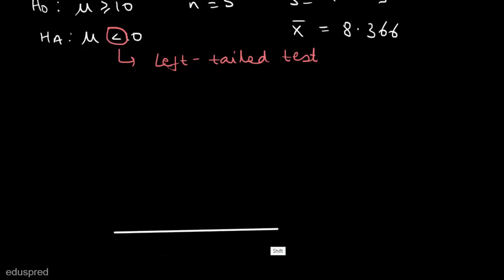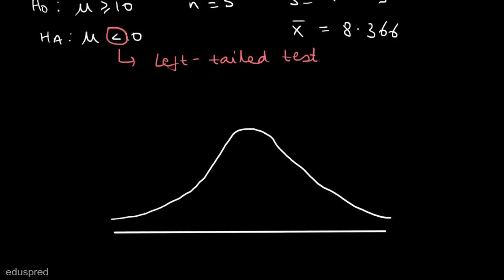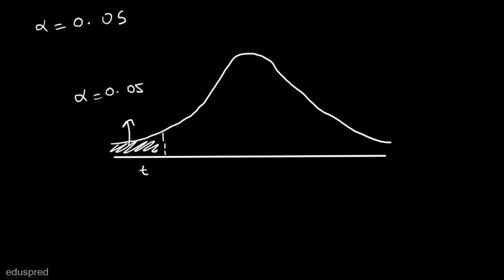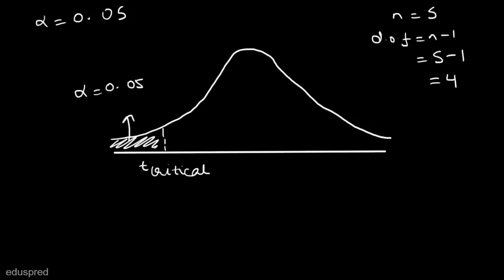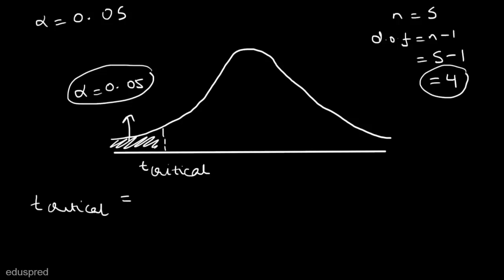Let's draw a t-distribution to see where the rejection region lies. The t-distribution is symmetric and bell-shaped. With alpha = 0.05 and a left-tailed test, the rejection region is in the left tail. This boundary is the t-critical value. With n = 5, the degrees of freedom equal n − 1 = 4. Looking up the t-table for alpha = 0.05 and df = 4, we find t-critical = −2.132.